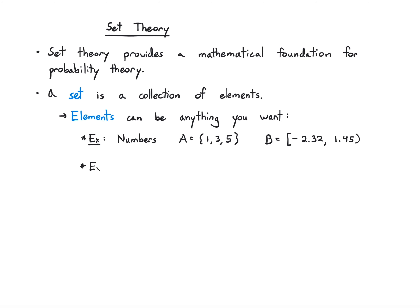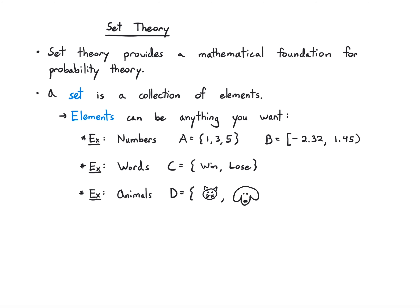What about words? I could have elements be words. So maybe I have the set C, which is {win, lose}. And maybe something even a little bit more abstract — so maybe I have animals; I'll just draw a picture of a cat and of a dog. I could take any combination of these: stars, planets, movies, or really whatever I want to think about, as long as I specify it clearly.